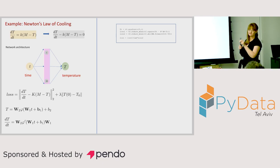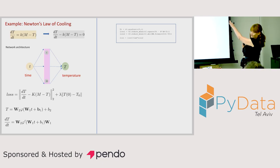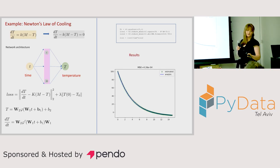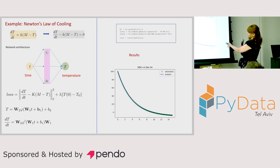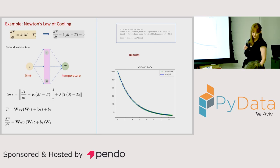We train the network by sampling time T over some range, adding the boundary condition, and training with this loss. It converges very fast with this very simple architecture. The blue line is the analytical solution, and the green X marks are the network estimates — they match very well. This is the basic idea.